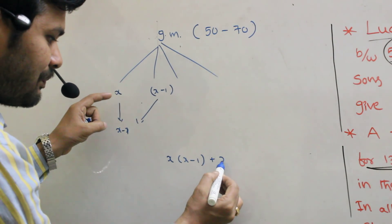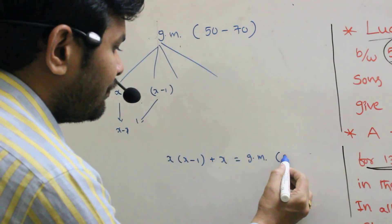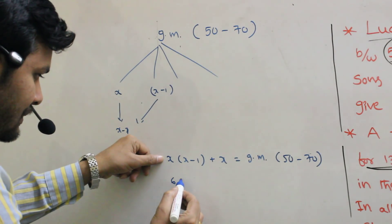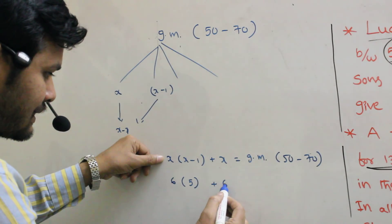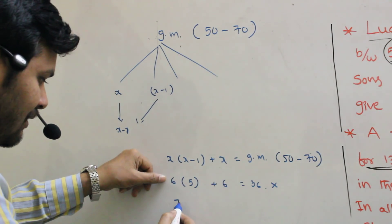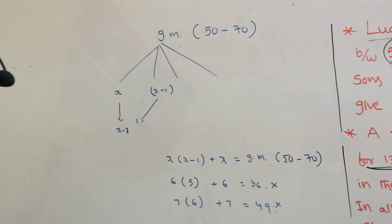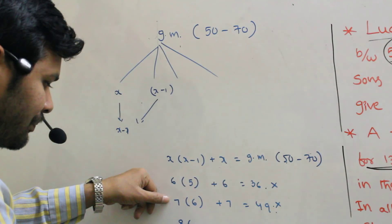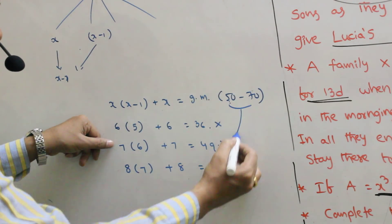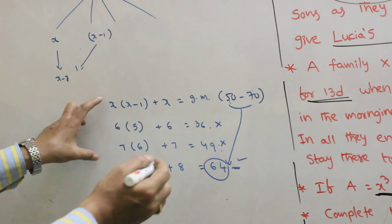Plus how many sons? X. That equals the grandmother's present age. The condition is that the age lies between 50 and 70. If X equals 6: 6 into 5 = 30, plus 6 = 36. This is less than 50, not considered. If X equals 7: 7 into 6 = 42, plus 7 = 49. Also less than 50, not considered. If X equals 8: 8 into 7 = 56, plus 8 = 64. This lies between 50 and 70. So the answer is 64.